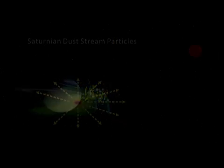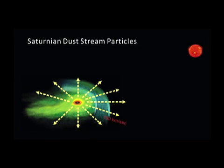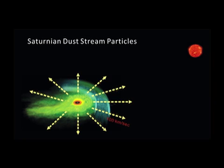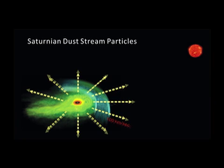Because they are so small, once they become charged, they're very sensitive to electromagnetic forces and are ejected from the Saturnian system with speeds more than 100 kilometers per second.